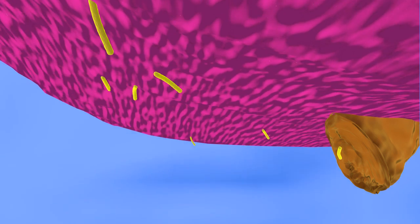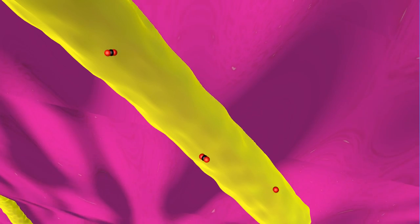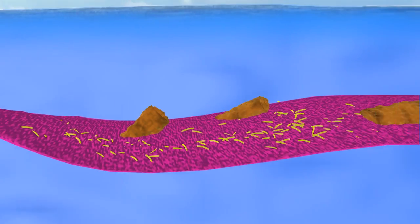Attached bacteria remineralize the particle. That means they take up organic material from the gel particle and produce energy and CO2, which is released to the water.